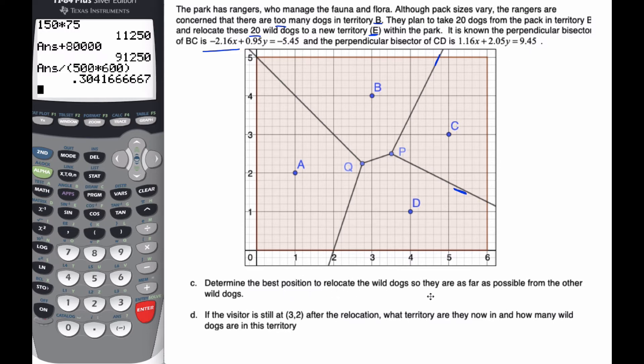Determine the best position to relocate the wild dogs so they are as far as possible from the other wild dogs. I want to put some kind of a point somewhere so that I'm far away from all the other dogs. This is exactly the toxic waste dump scenario or the largest empty circle problem. I want to be able to put a circle on here somewhere that is large. If I do a circle from these vertexes, here's one circle and here's another circle. It looks like Q is going to be the largest circle, but we have to justify and calculate this.